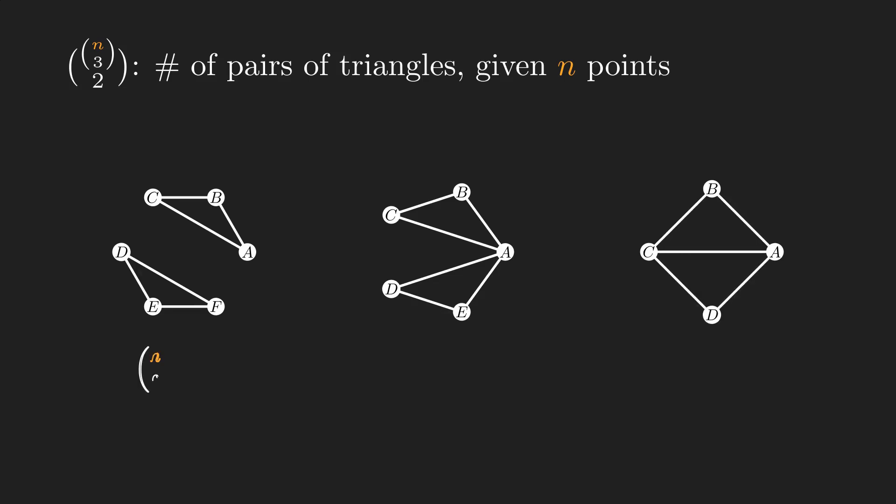The first case requires 6 points out of n, then 3 points out of 6 to define the first triangle, and finally 3 points out of the remaining 3 to define the second triangle. We should divide this number by 2, since the order in which triangles are drawn does not matter. The second case requires 5 points out of n, then 1 point out of 5 to be the one that is shared. Next, we select 2 points out of the remaining 4. These 2 and the shared points will form the first triangle. Lastly, we select 2 points out of the remaining 2 for the second triangle. We divide by 2 for the same reason as the previous case.